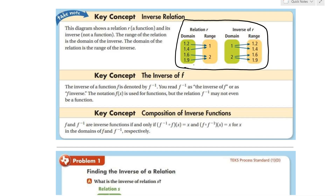Another key concept is the inverse of f. The inverse of a function f is denoted as f inverse — that's how you read it. That negative one looks like an exponent, but it means the inverse of f.